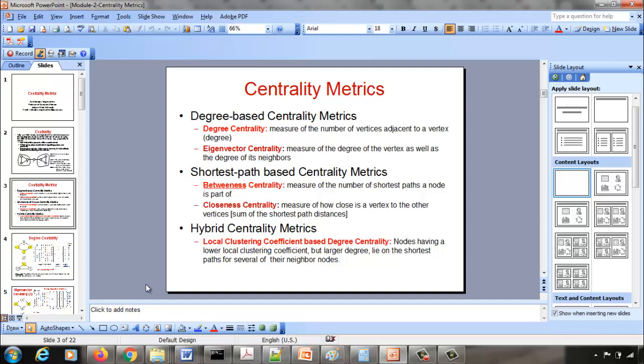Now we look at what's called a hybrid centrality metric that brings together the best of the degree and shortest path centrality metrics, and we'll call it the local clustering coefficient-based degree centrality. We have not yet looked at what a local clustering coefficient is, but once we look at it, we will be able to put together that along with the degree. The idea here for this local clustering coefficient-based degree centrality is it's a kind of computationally light version for the betweenness centrality metric, and we'll see that when we look at that metric in detail.